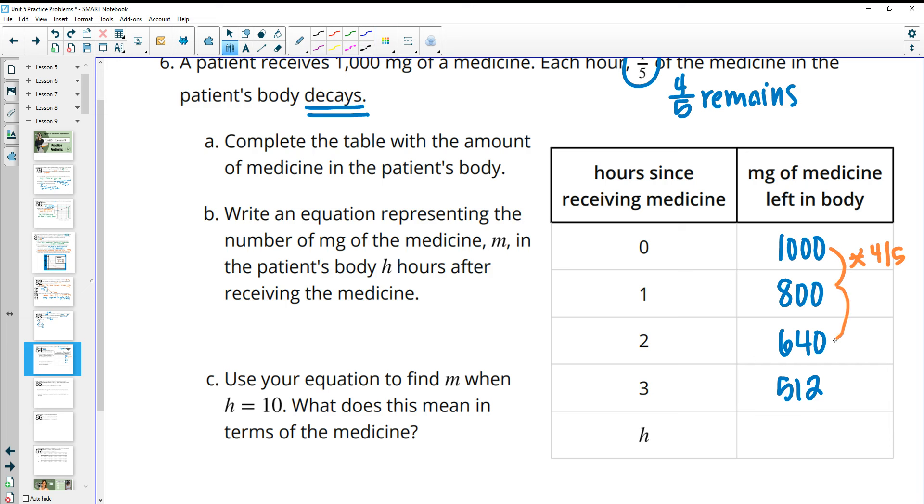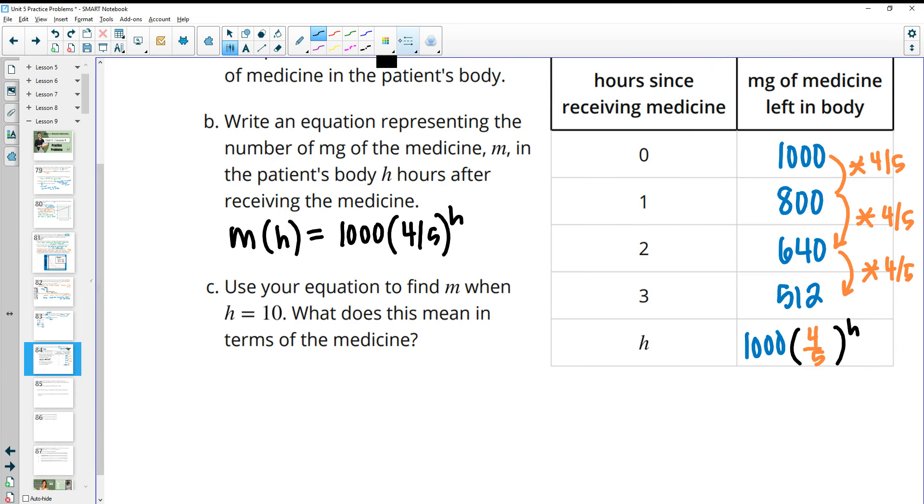So then we know when we write the equation, we would take our initial value of 1,000, multiply by the growth factor or what remains in the body, which in this case is four-fifths. And we would do that as many times as we need to for each hour. So that's our equation here. M of H is going to equal 1,000 times four-fifths to the H power. Then it wants us to plug 10 in for H into our equation to figure out how much remains after 10 hours. If we do that, we end up with about 107 milligrams remaining.